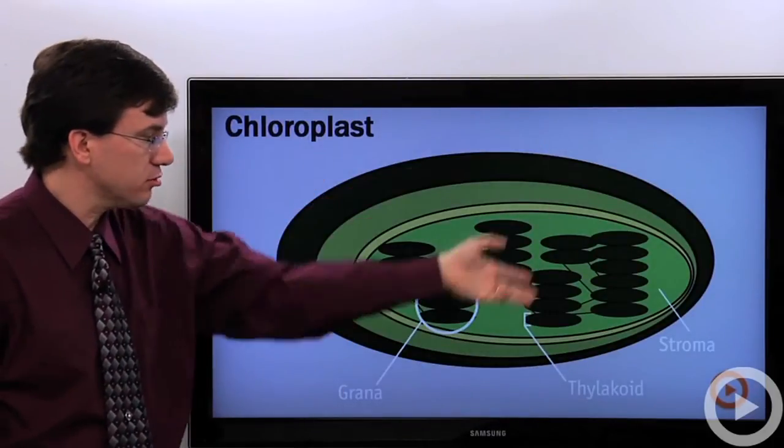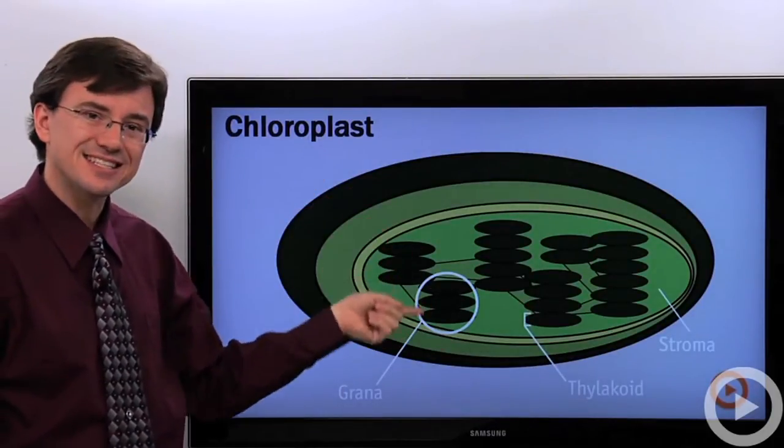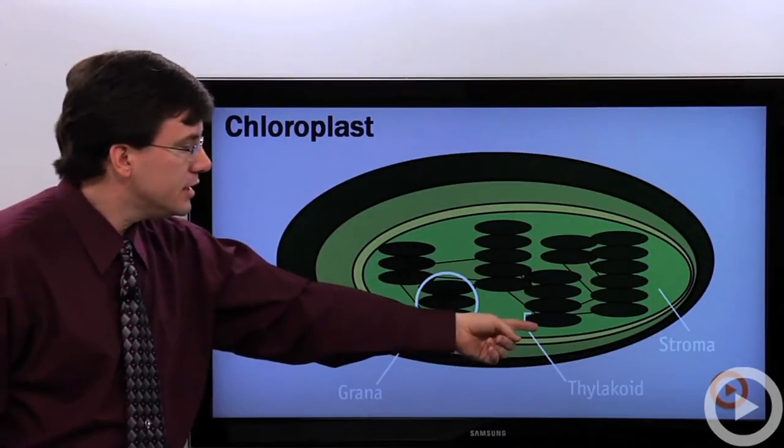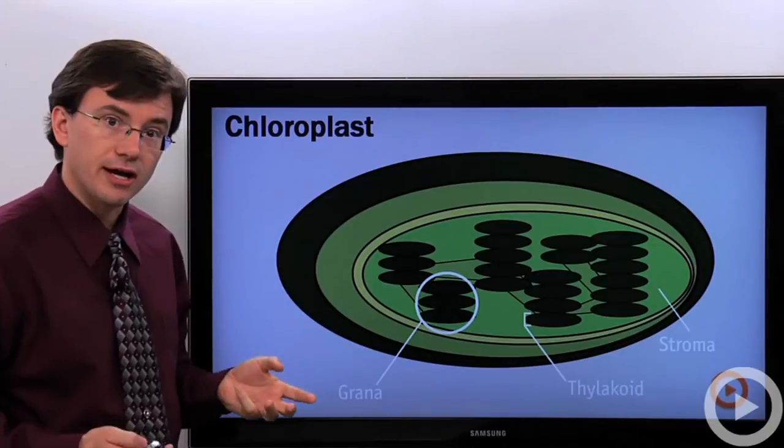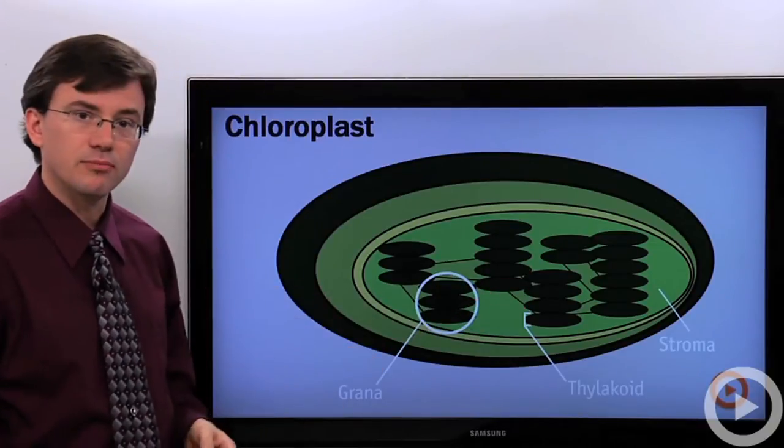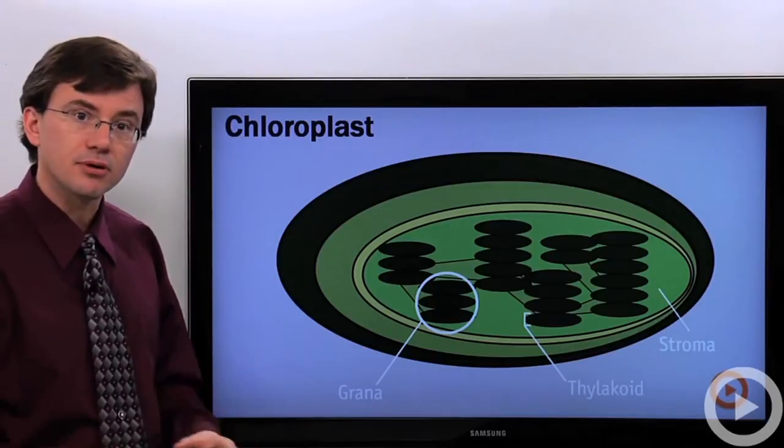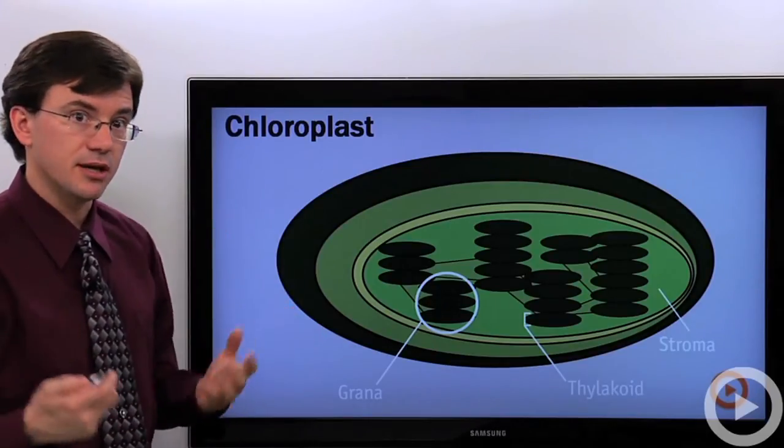If we take a closer look at the chloroplast, we'll see these stacks of membrane that are in stacks called granum and each individual disc is called a thylakoid and it's in the thylakoid membrane that you find the embedded molecules that make up the light-dependent processes and mechanisms.